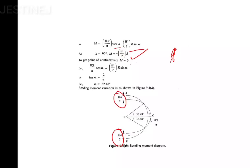Next we find the contraflexure point — the angle at which the bending moment changes sign. Setting M = 0 and solving, alpha = 32.48°. Both fixed ends have bending moment Wr/2, the angle is 32.48°, and M0 = Wr/π — that's the bending moment diagram.